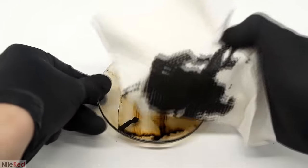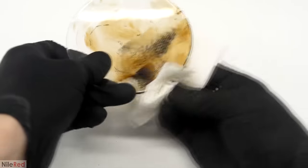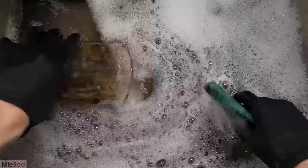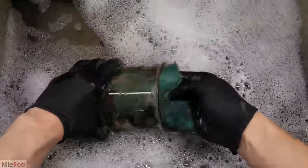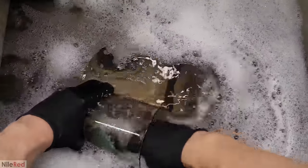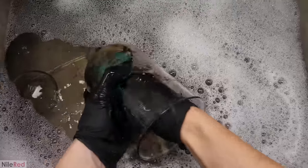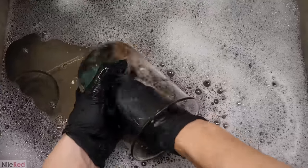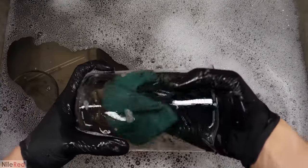So now in terms of cleaning the first step was to wipe off as much as I could just with some paper towels. Then after that I threw them all into the sink which I had filled with some really soapy water. The soap was able to interact with the oleic acid on the magnetite and with a lot of scrubbing I was able to clean off almost everything.